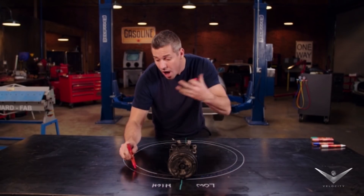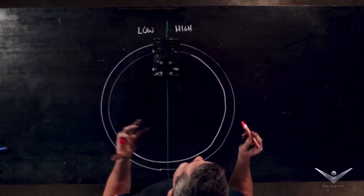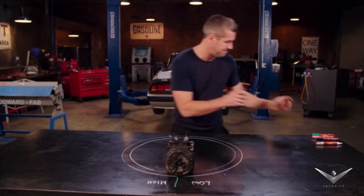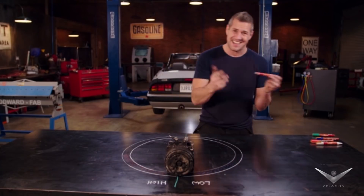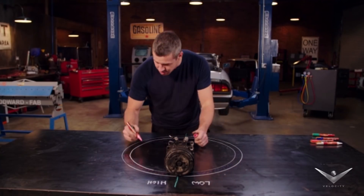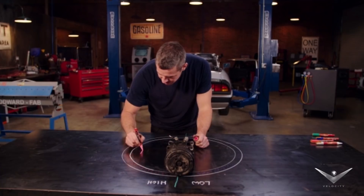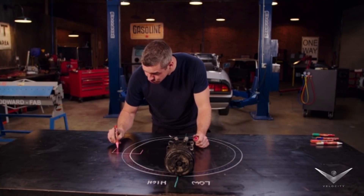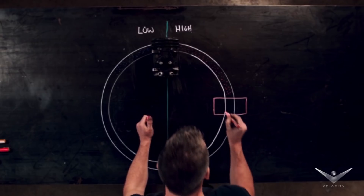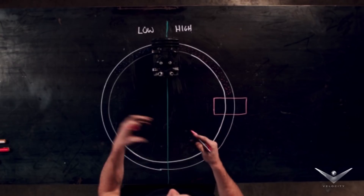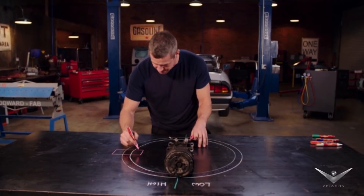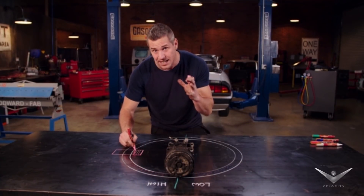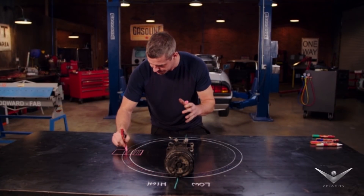That hot high pressure gas is then forced into a condenser. The condenser is just like a radiator — it cools that gas down just enough to turn it from a gas into a liquid. It's still hot and it's still high pressured.